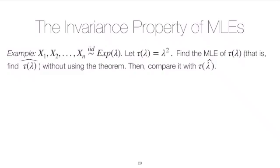In class we learned about the invariance property of the maximum likelihood estimator, which is a really important property in applications. The invariance property basically says that if you want the maximum likelihood estimator of a function of your original parameter, you can just take that function of the MLE of the original parameter. That makes life easy because once you find the MLE for the original parameter, you just take that function, which is relatively easy to compute.